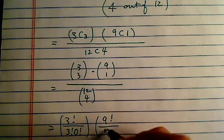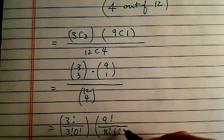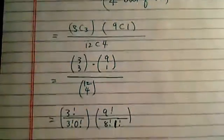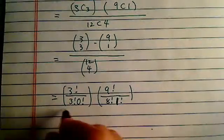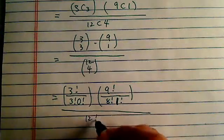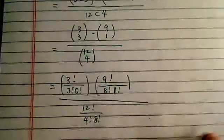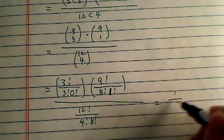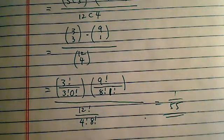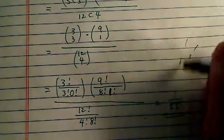9, 8, and 1. That's divided by 12, 4, and 8. Now if you finish this one, you'll have 1 over 55 is the probability. Alright, hope this helps. Have a confident day.